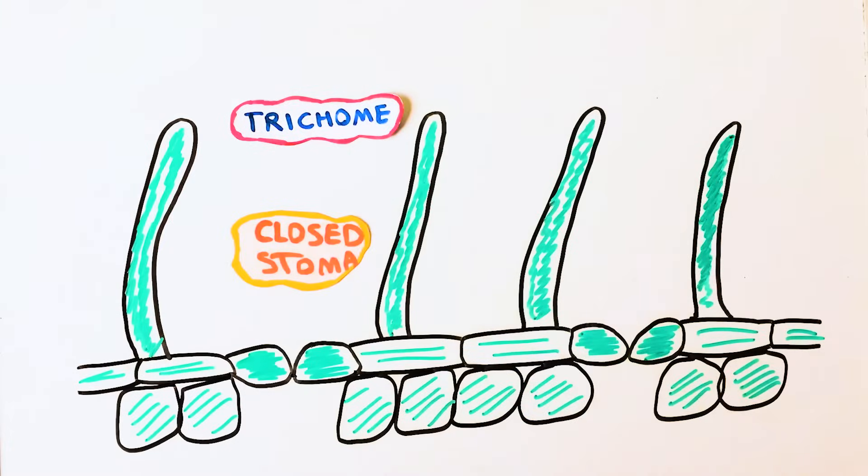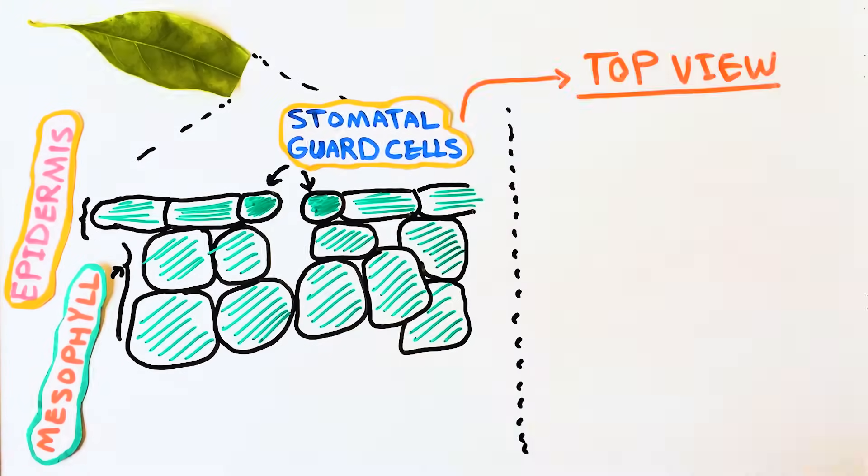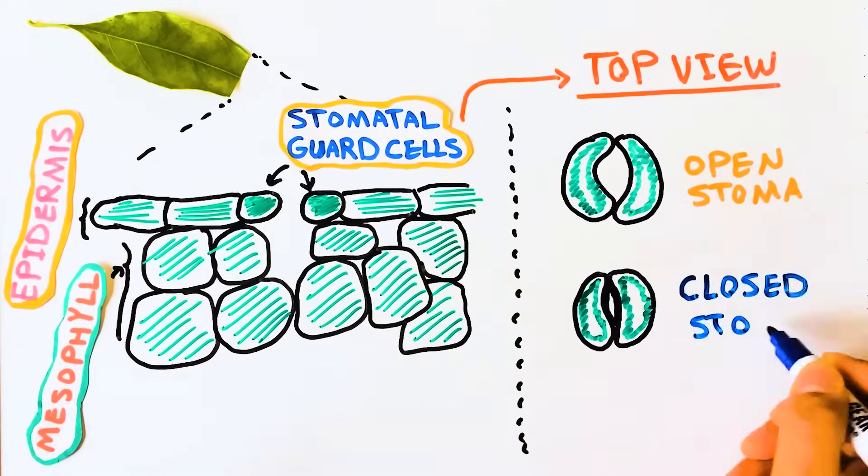By the way, common leaf surface microstructures include microcolumns called trichomes and micropores called stomata. Each stomatal pore consists of a pair of bean-shaped guard cells that can open and close the pore at different environmental conditions.